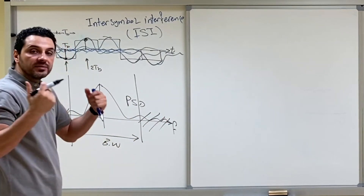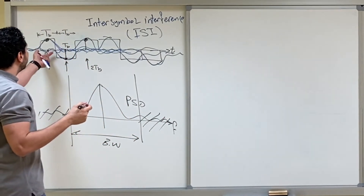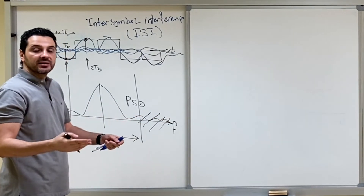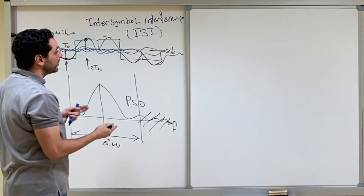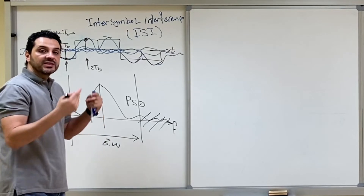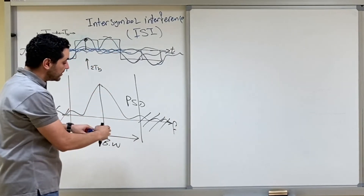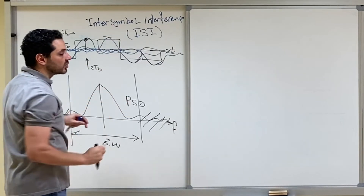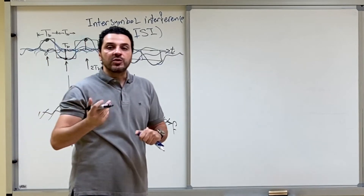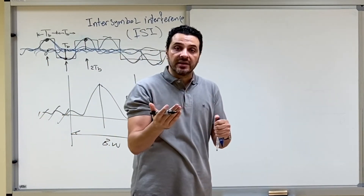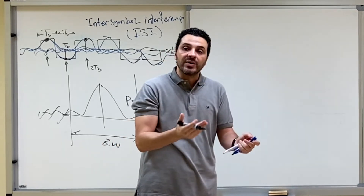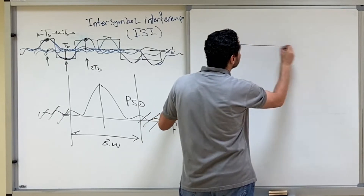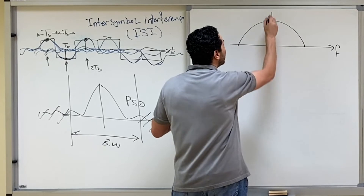The origin of the problem is that we started with a time-limited pulse — the rectangular pulse — whose spectrum was unlimited. When we try to transmit this spectrum over the channel, we have to cut it. When we cut it, it caused distortion to the time domain, causing inter-symbol interference. So: time-limited pulses → unlimited frequency → cut in frequency → distortion in time.